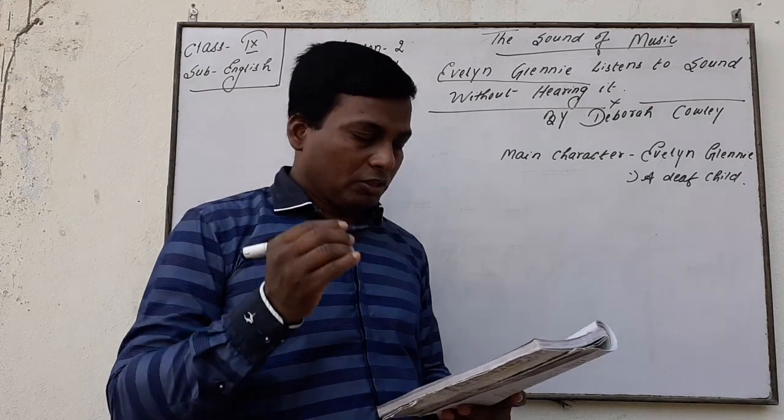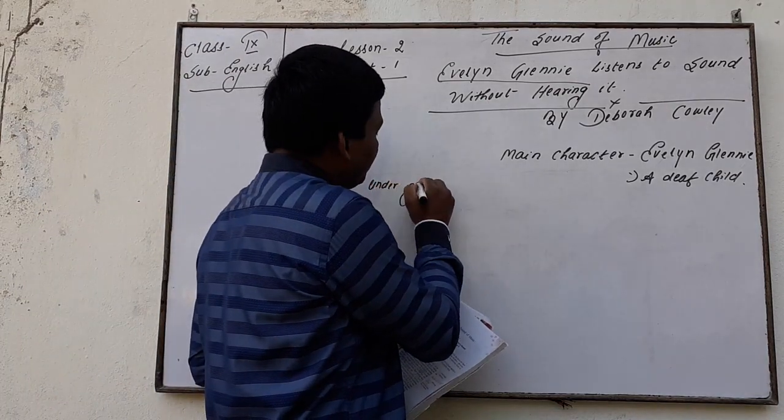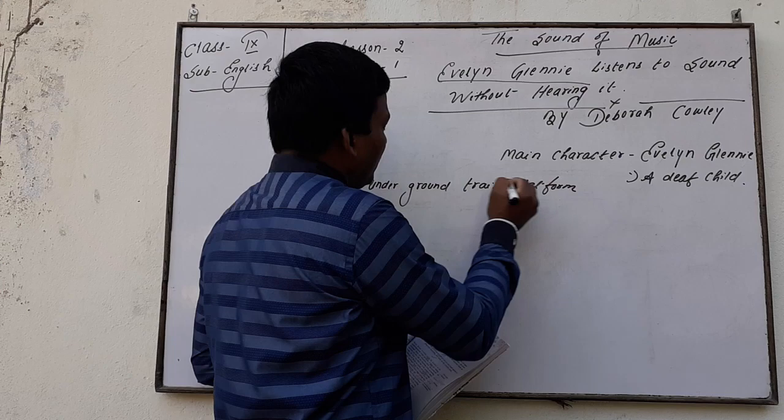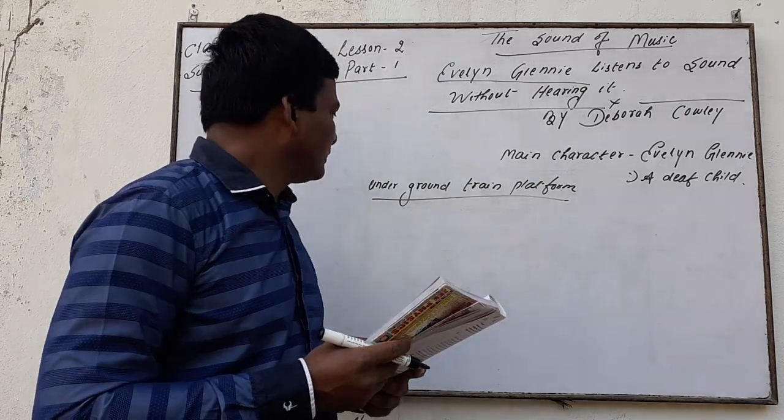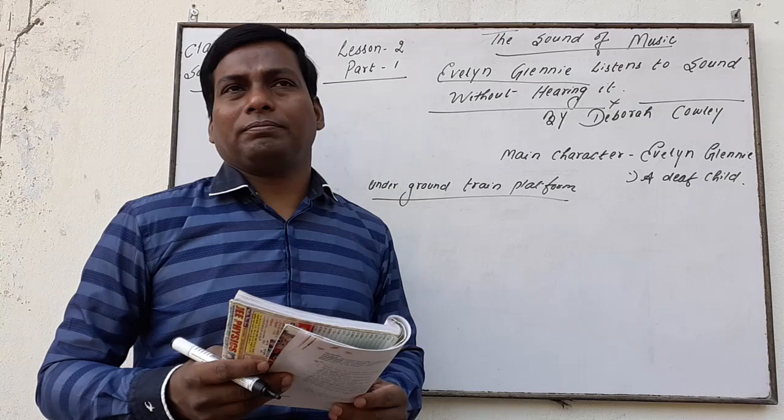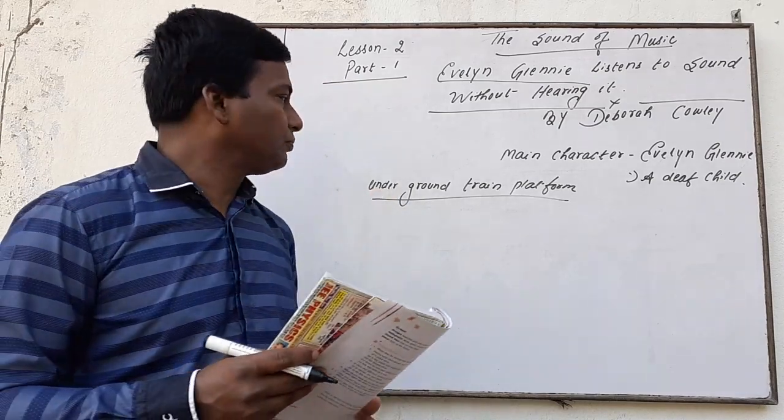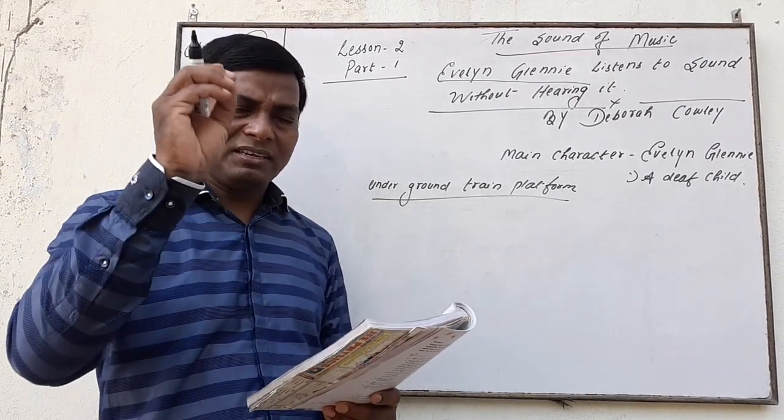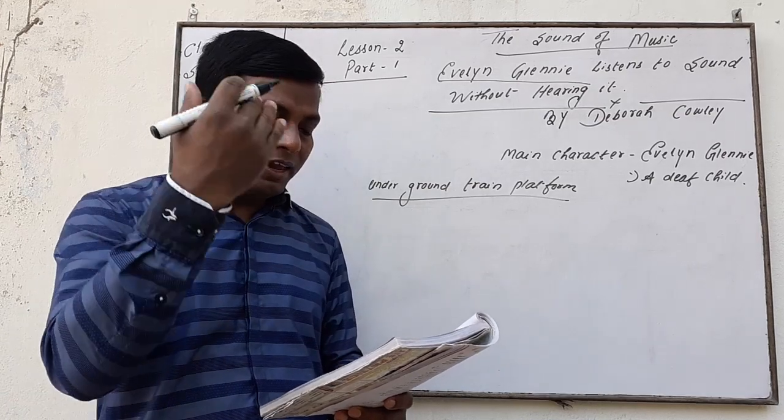Rush hour crowds jostle for position on the underground train platform. There was underground train platform and on that platform, there were so many people. It was the rush hour. There was a huge crowd on the platform. A slight girl, slight girl means small, lean and thin girl looking younger than her 17 years.